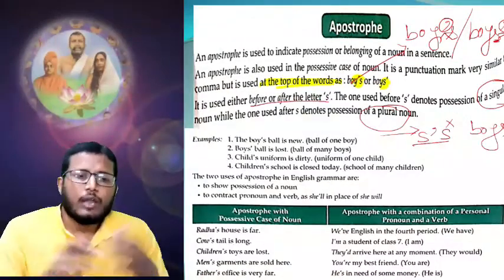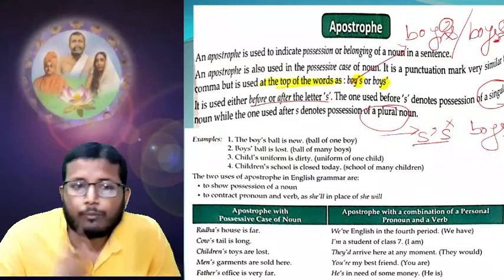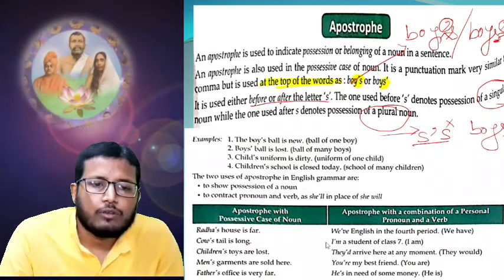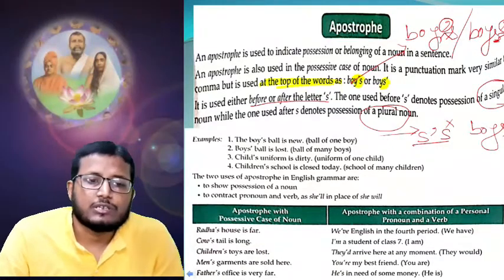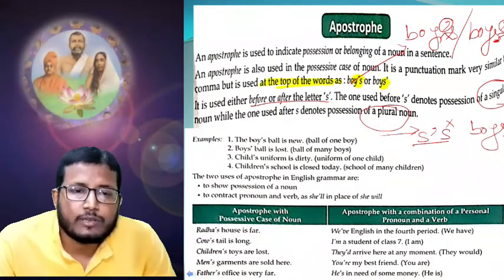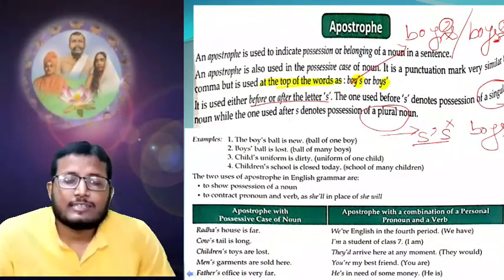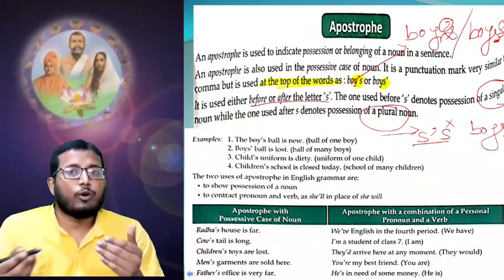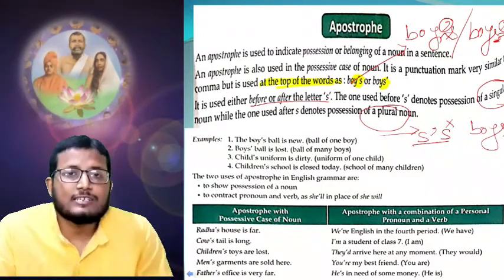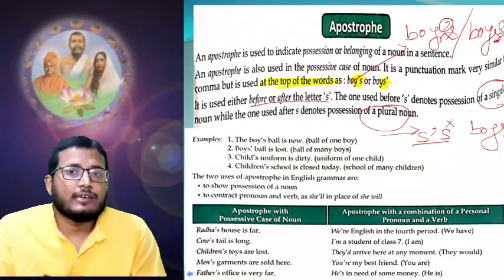Examples: 'The boy's ball is new' — number of boys is one, singular. 'The boys' ball is lost' — number of boys more than one, plural. 'The child's uniform is dirty' — number of children is one. 'The children's school is closed today' — more than one child. Now you might ask: for plural I should add only apostrophe and not write S, but in the case of children we see apostrophe and then S.